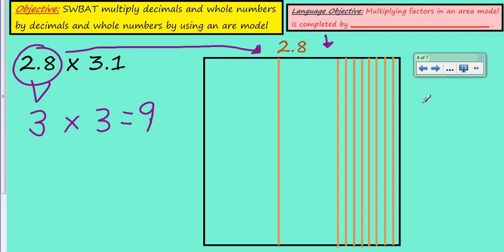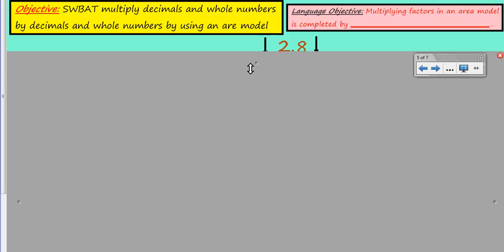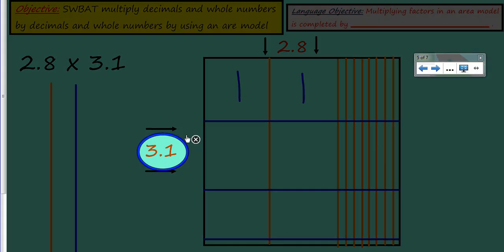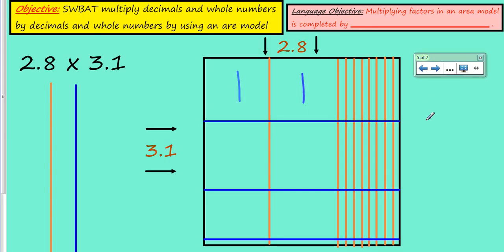We have one here, we have two here, that represents the two. And one, two, three, four, five, six, seven, eight, that represents the eight tenths. So 2.8 I'm showing in a vertical fashion. Now I need to represent the other one. I'm going to represent 3.1 going horizontally. That's one, two, three, and way down at the very bottom is the one tenth.